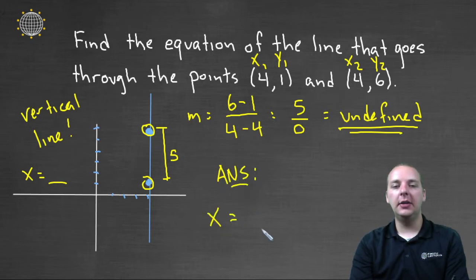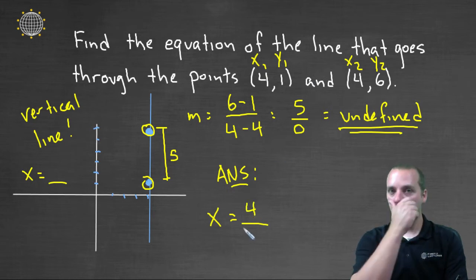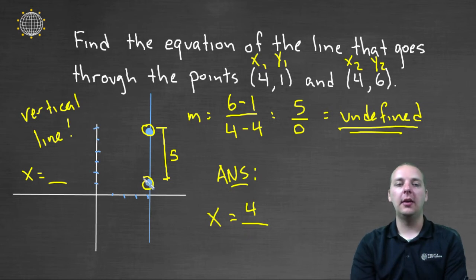Our answer would be x equals something. Now, what is the x value for these two points here? Well, it's (4,1) and (4,6). The x value is 4. And in fact, that's the x value for all ordered pairs on that line.